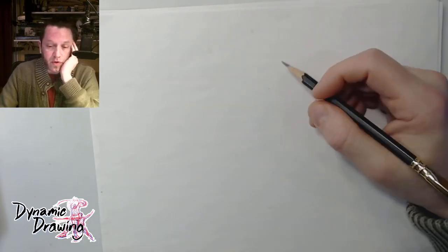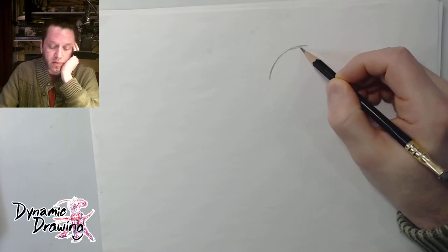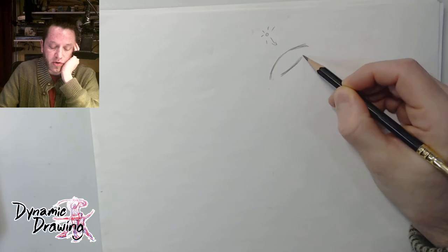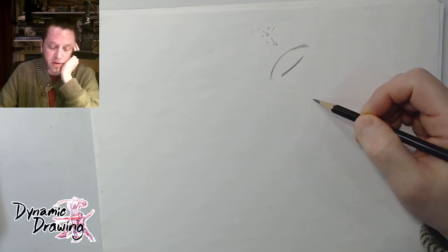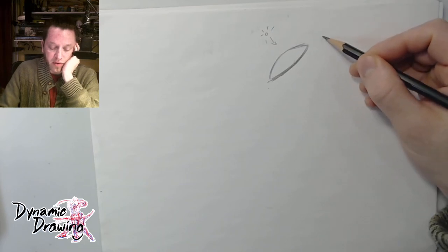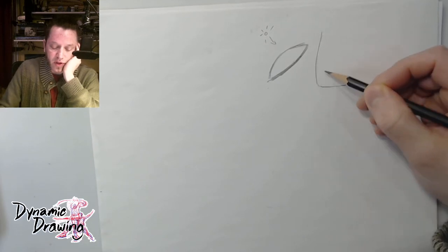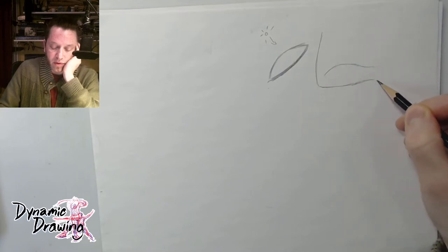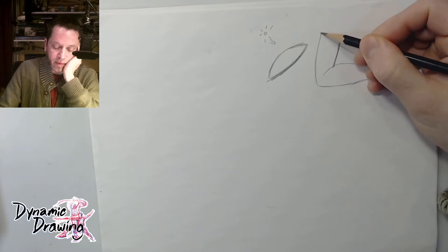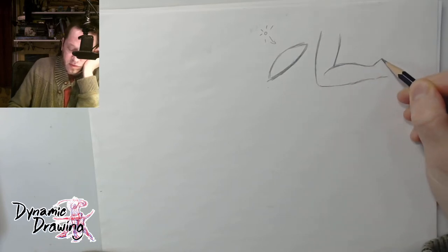That video is about when you would use a thicker or thinner line in terms of logic — be it thinner where there's a light source, and generally thicker in shadow on the back of a contour shape facing away. Or the concept of thin, or even a break in line, where the bone is close to the surface, and thicker where the muscle or meat or fat is more present.